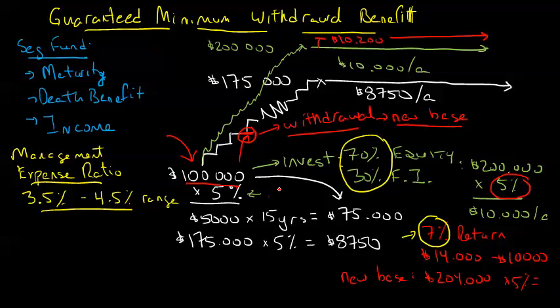And they made those bad decisions to take withdrawals at a down time in the markets. Of course, with a segregated fund, you never want to take money out when you're down because of the guarantees, and unfortunately sometimes in retirement you just don't have a choice.